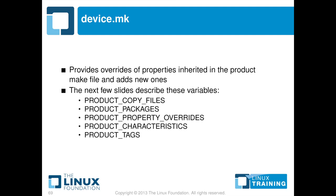The next one we need to look at is device.mk. This does a whole load of things — I'm just going to cover the very basic, minimal stuff. This allows us to define more and more fine detail of what goes into our product. We do that with PRODUCT_COPY_FILES, PRODUCT_PACKAGES, and so on and so forth.